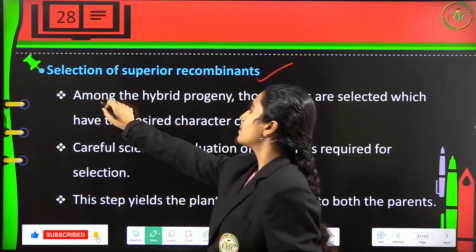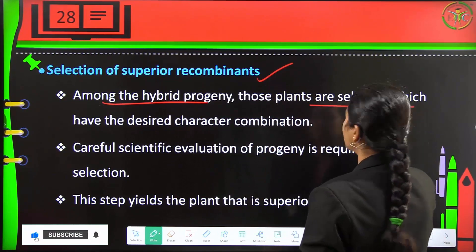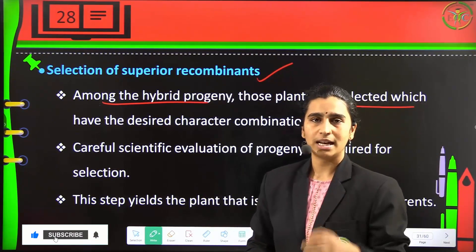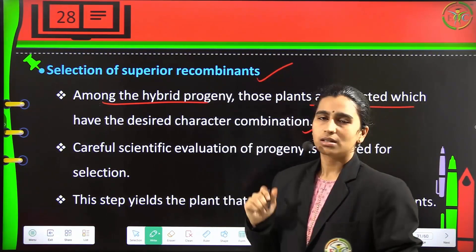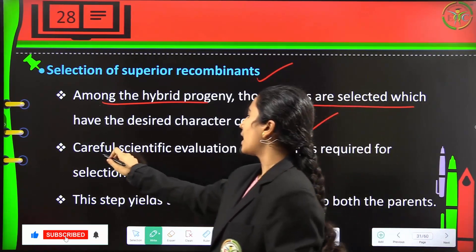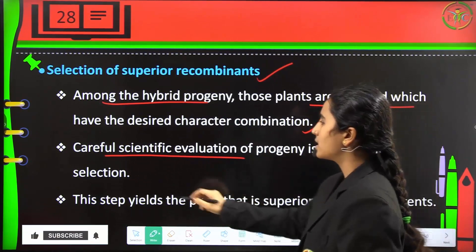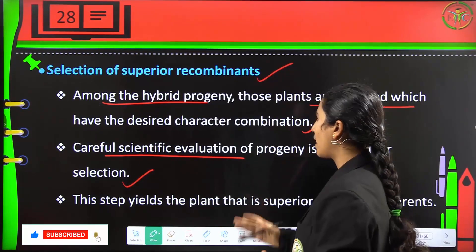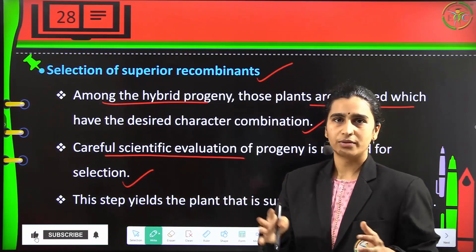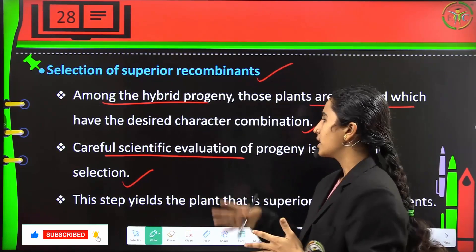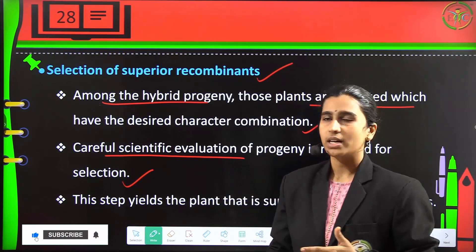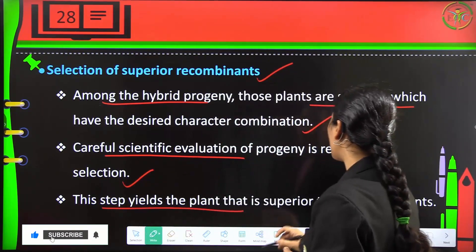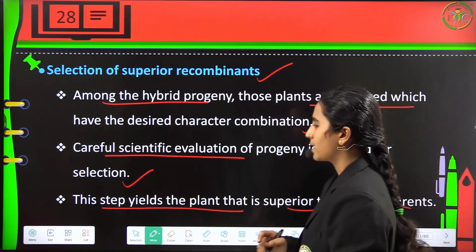Next is selection of superior recombinants — those which exhibit dominant traits. Among hybrid progeny, plants with the desired characteristic combinations are selected. Careful scientific evaluation of the progeny is required because we must select traits properly; otherwise toxins may be produced or the plant may be harmed, causing loss of the whole crop yield.